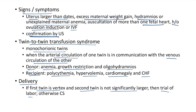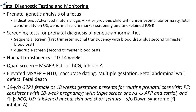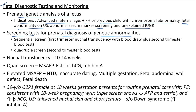The most common cause of post-term pregnancy is inaccurate dating. Post-term pregnancy is associated with anencephaly and adrenal hypoplasia. Indications for prenatal genetic analysis: advanced maternal age, positive family history for a genetic deformity, previous child with chromosomal abnormality, fetal abnormality on ultrasound, abnormal serum marker screening, and unexplained intrauterine growth restriction.